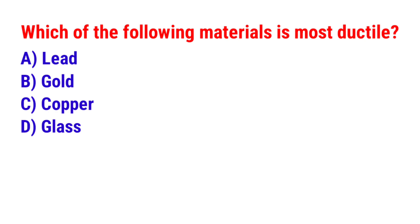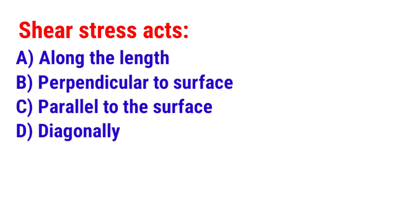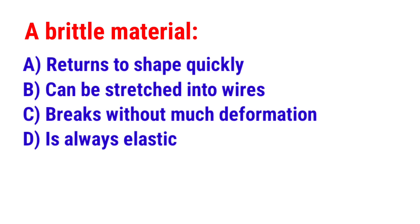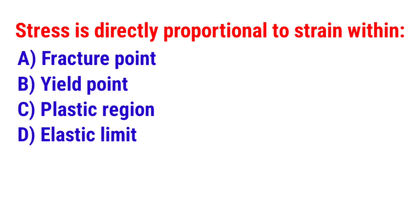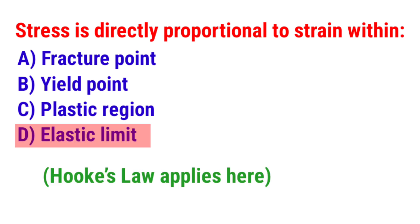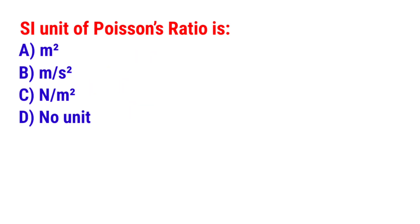Next question: Which of the following materials is most ductile? The answer is option B — Gold. Next question: Shear stress acts? The answer is option C — Parallel to the surface. Next question: A brittle material? The answer is option C — Breaks without much deformation. Next question: Stress is directly proportional to strain within? The answer is option D — Elastic limit. Next question: The SI unit of Poisson's ratio is? The answer is option D — No units.